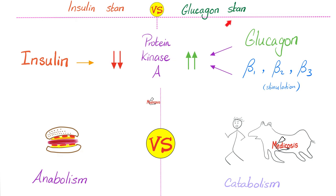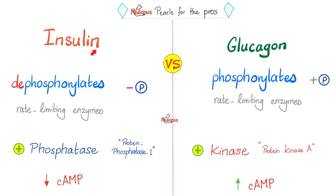Insulin is anabolic; glucagon is catabolic. Insulin decreases protein kinase A and decreases cyclic AMP; glucagon increases protein kinase A and increases cyclic AMP. Insulin loves dephosphorylation — activating phosphatase such as protein phosphatase 1 to remove a phosphate. Glucagon loves phosphorylation of rate-limiting enzymes by activating protein kinase A. Glucagon is similar to beta agonists, and that's why glucagon is the antidote to beta antagonists.